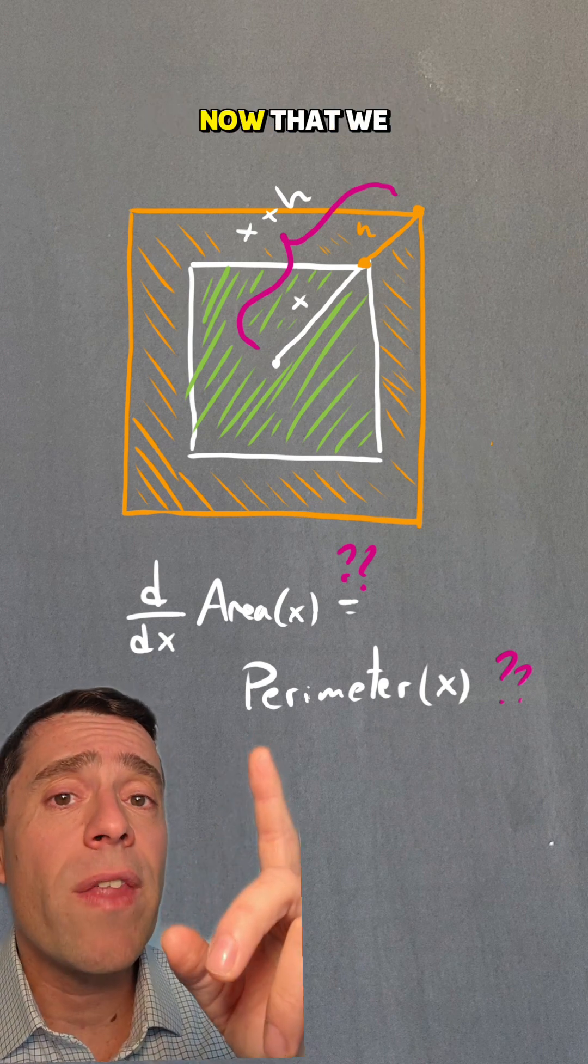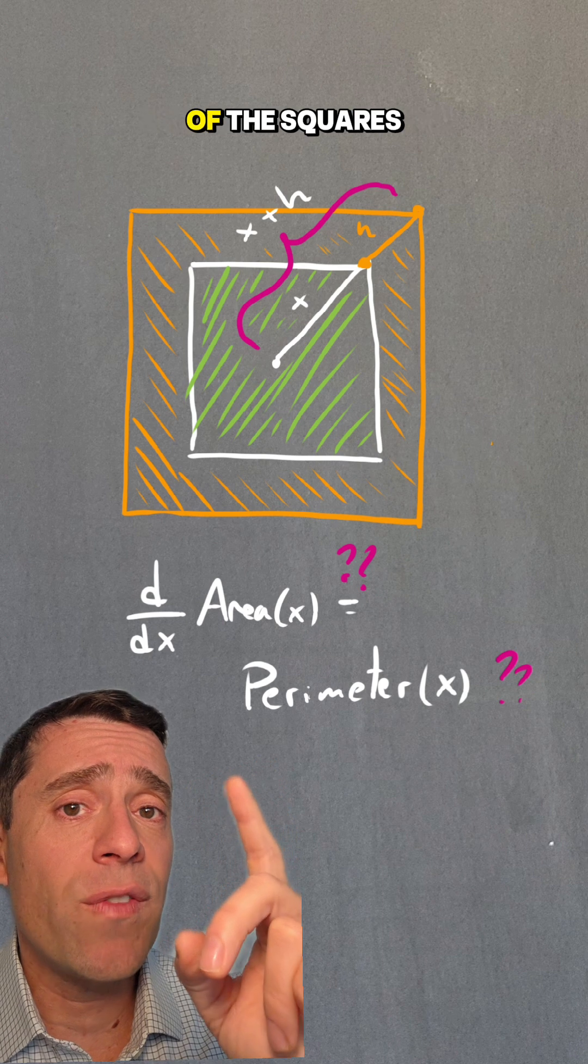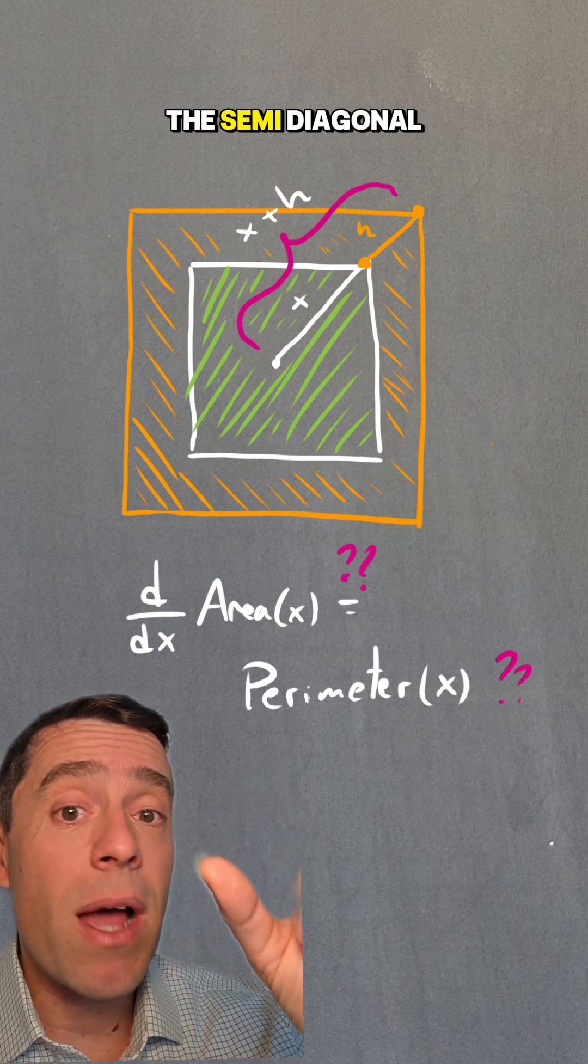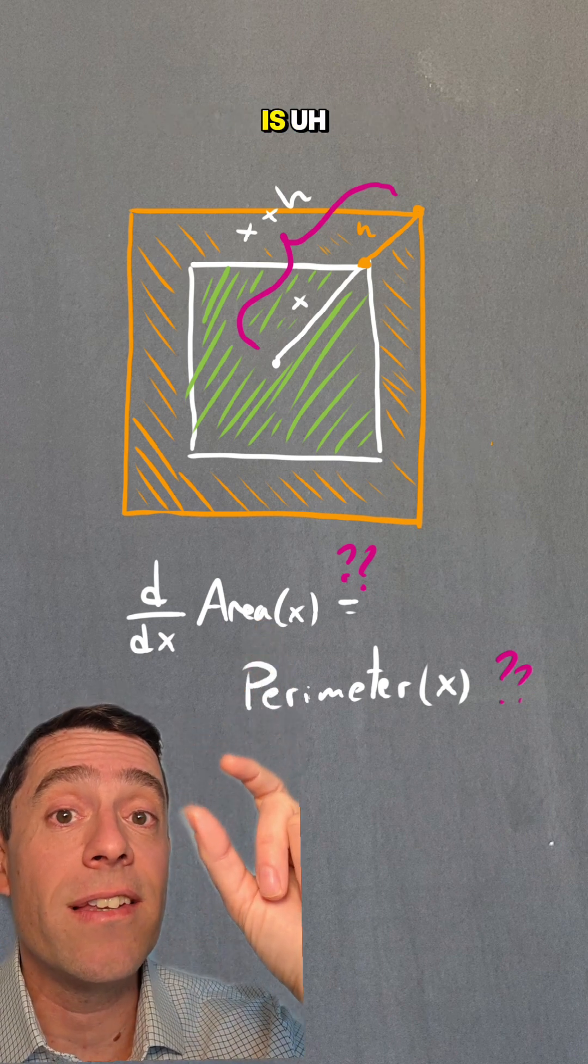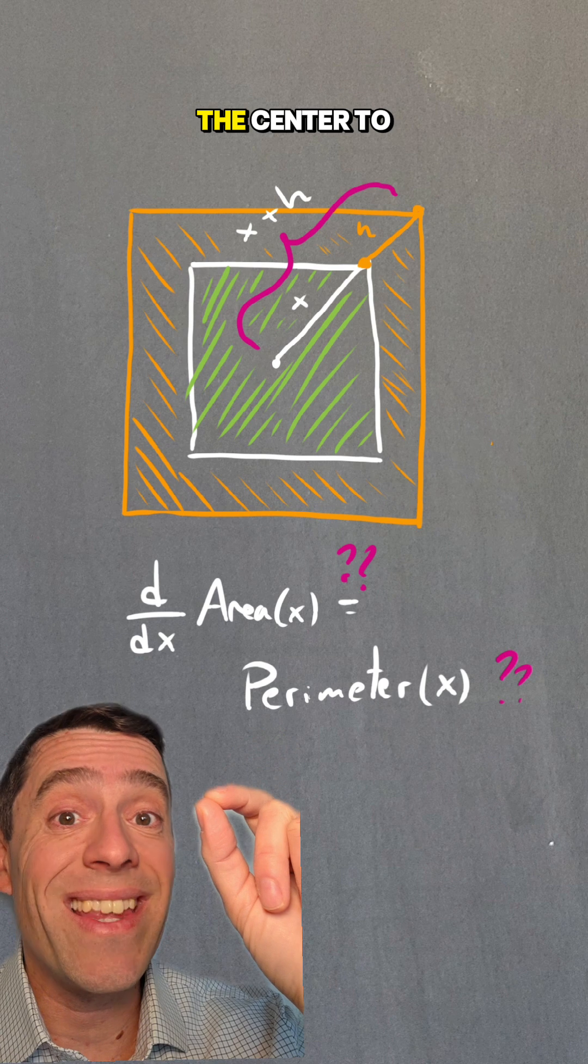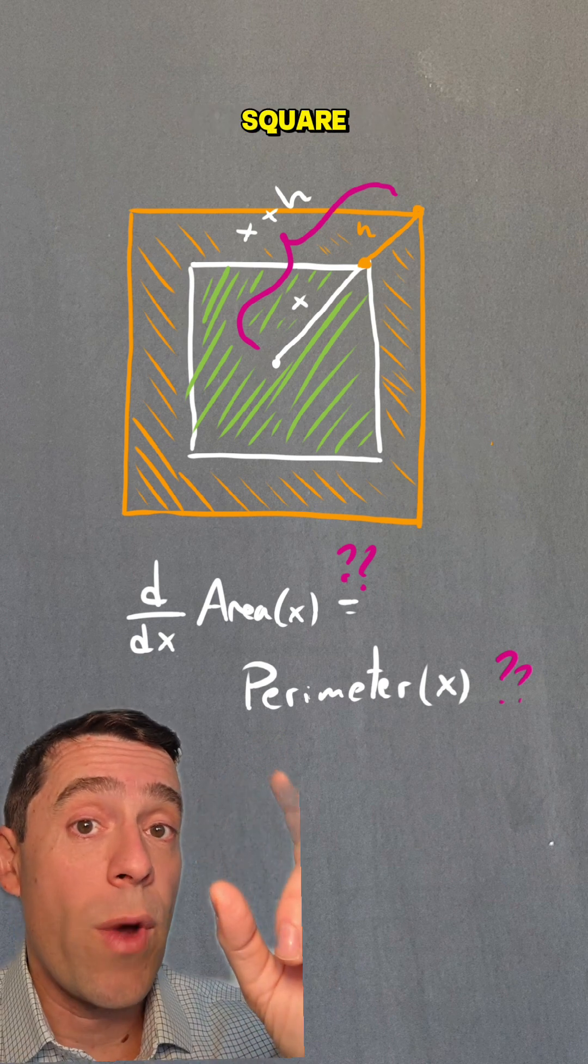For example, suppose now that we are computing areas of the squares in terms of the semi-diagonal. So now x is the distance from the center to one of the vertices of the square.